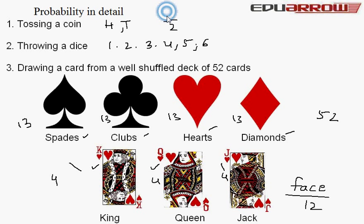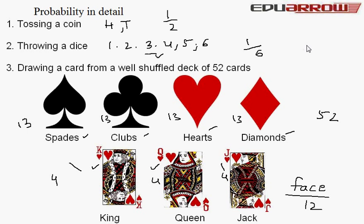For a dice, if we want to get the number 3: the probability of getting 3 is 1 by 6, because 3 appears only once and the total number of conditions is 6. We take the favorable condition upon the total number of conditions.